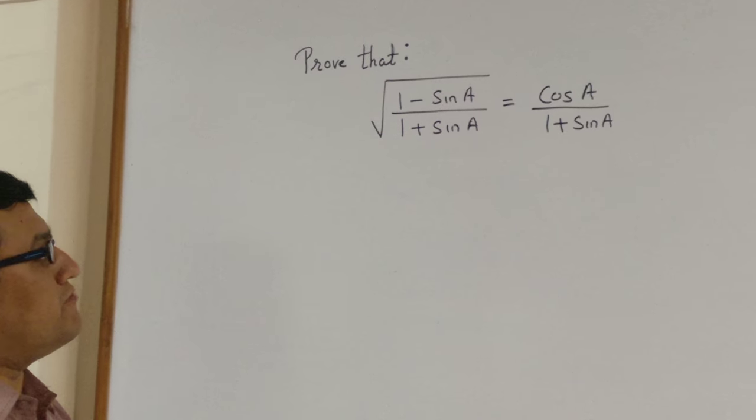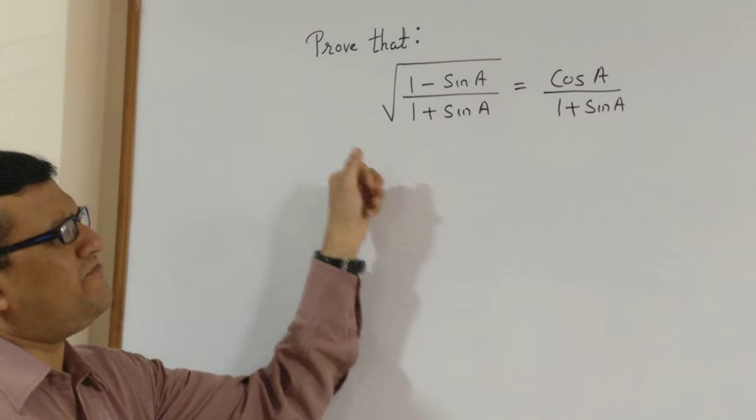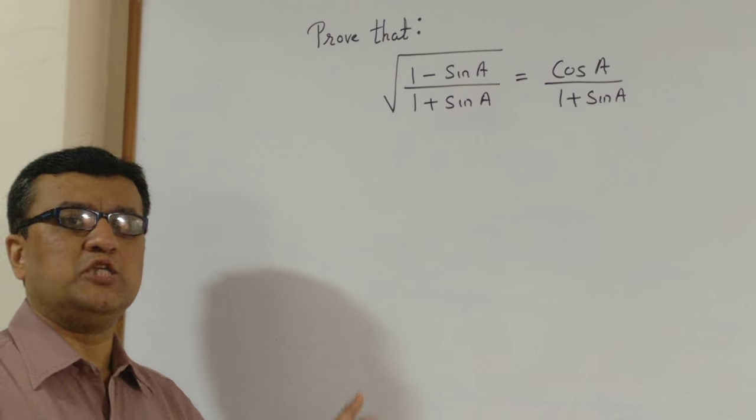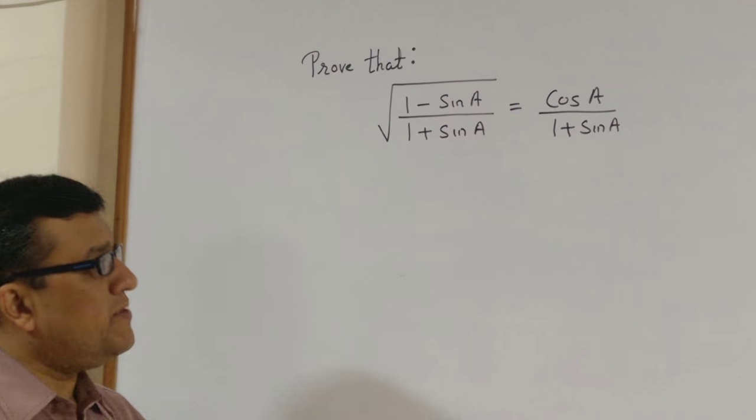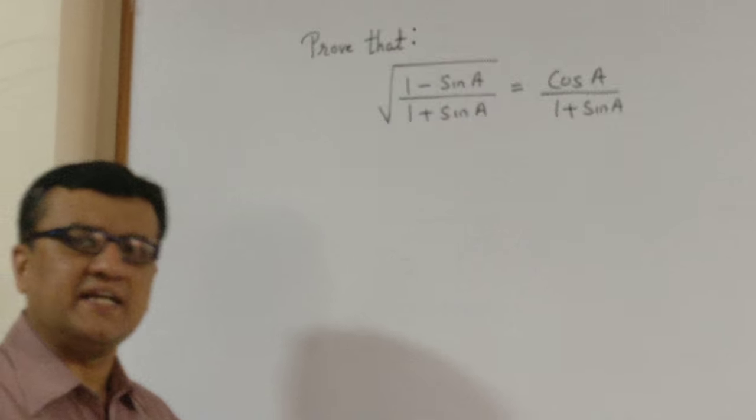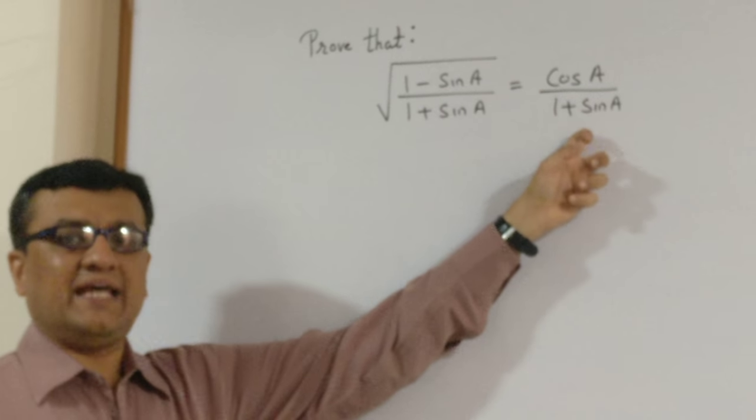Normally whenever we see a root sign it is said that we need to take the conjugate of either numerator or denominator and rationalize it. Today we are going to do it by a totally different technique. We won't take LHS, rather we start with RHS and then finally reach to our LHS.